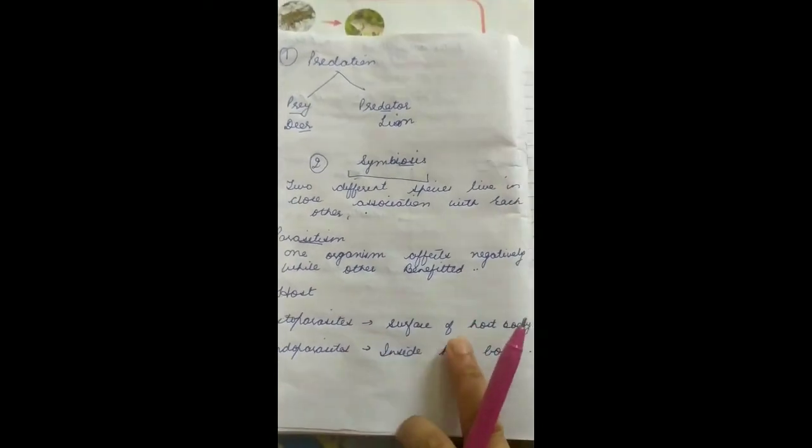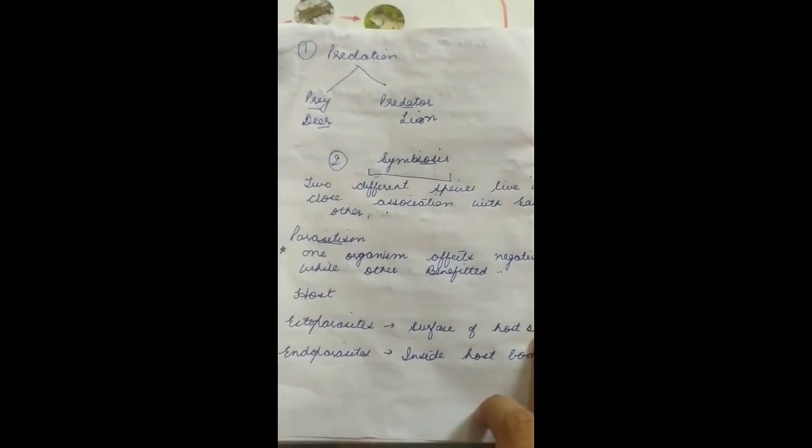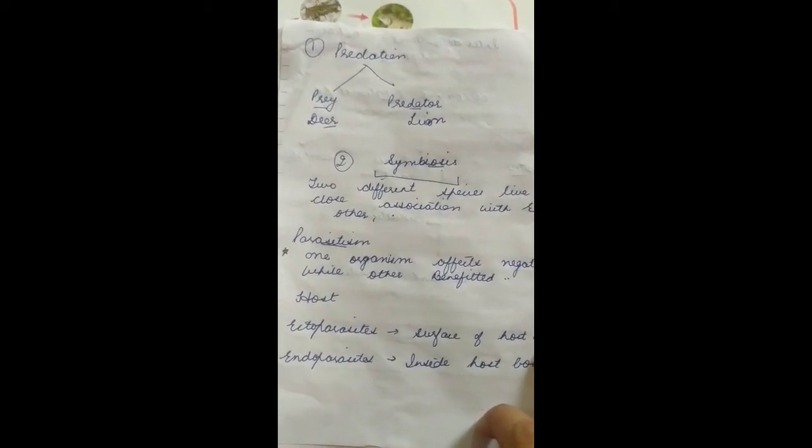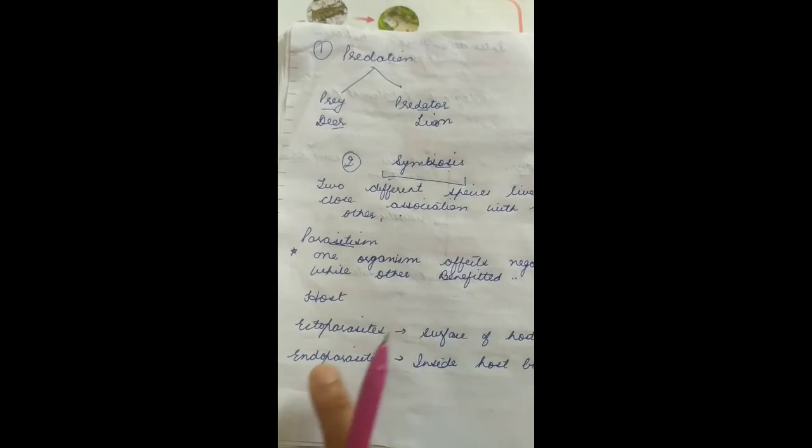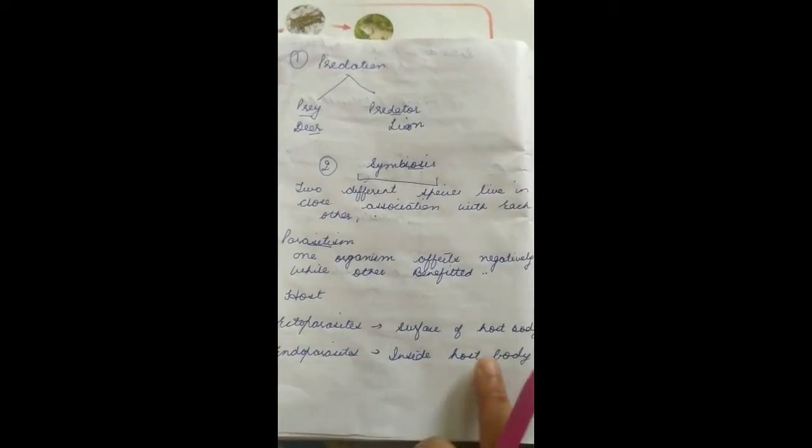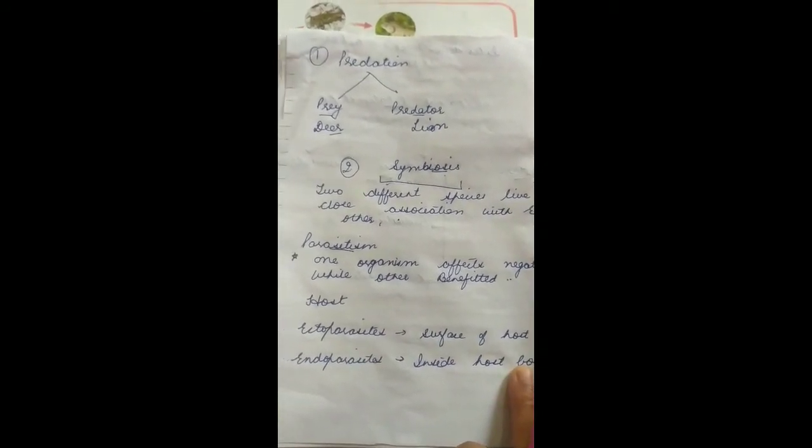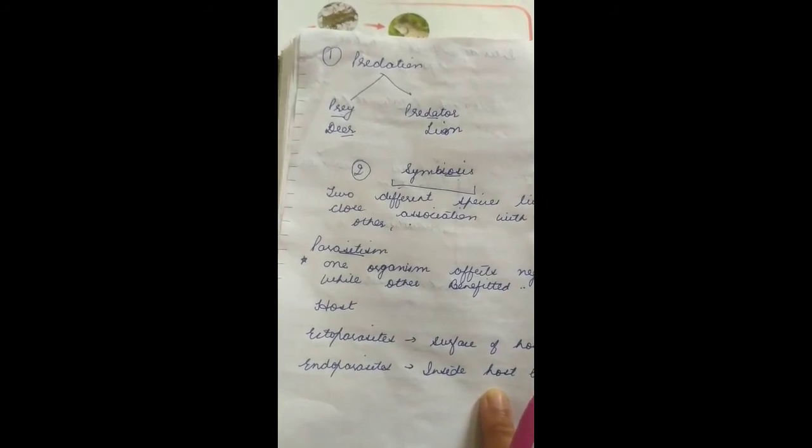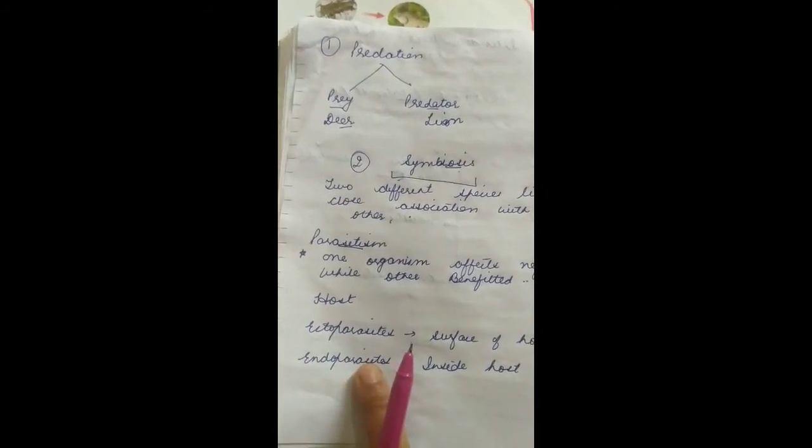Ectoparasites are the parasites which live on the surface of the host body, for example, ticks that live on the surface of dogs or other animals. And endoparasites live inside the host body, such as some harmful amoebas or flatworms. They are the endoparasites which live inside the host body.